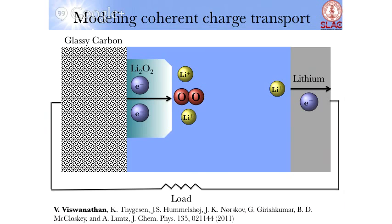Modeling this is complicated: you have carbon particles — specifically glassy carbon — with lithium peroxide growing on them, and lithium ions and oxygen coming in to react. We want to study the rate at which electrons are supplied across this system. To simplify, we can substitute the glassy carbon with any conductor of similar work function — we use gold.